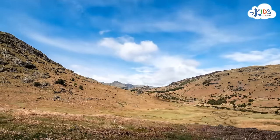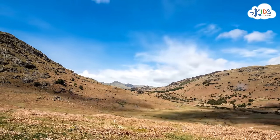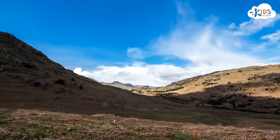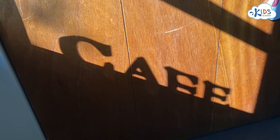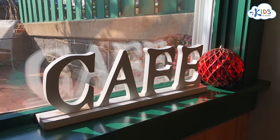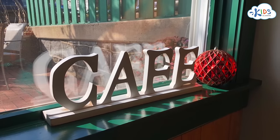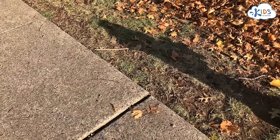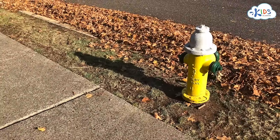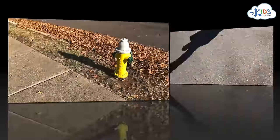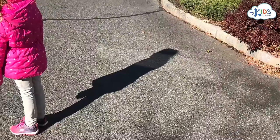As sunlight comes down to earth, sometimes it gets blocked by clouds. The clouds will make shadows like this. Try and guess the objects that made these different shadows. This shadow here was found at a restaurant — it's created by these wooden letters. This shadow is created on a curb near the road — it's a fire hydrant shadow. What about this shadow here? It was made by a little girl.